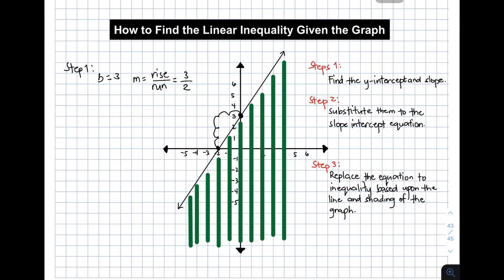After finding the slope and the y-intercept, step number 2 is to substitute them into the slope-intercept equation y = mx + b. All you need to do is substitute these values, so you have y is equal to 3 over 2 as the value of m, plus your b which is your y-intercept, equal to 3. And there you have it — you already have the linear equation.